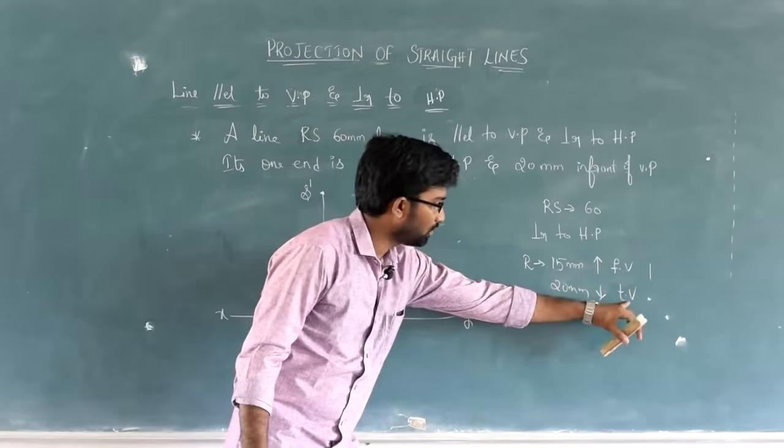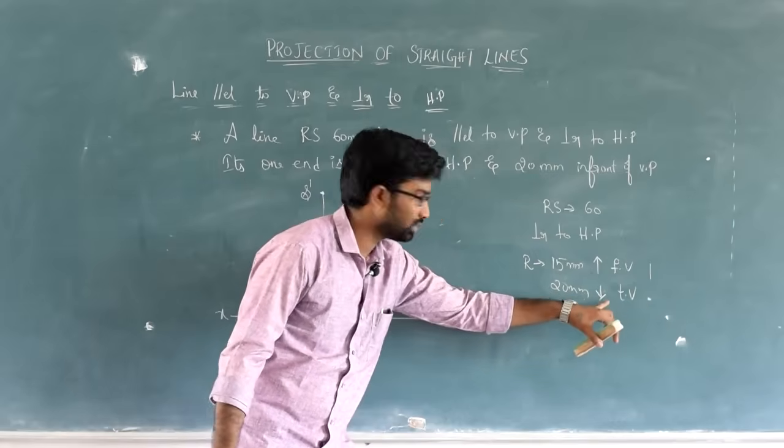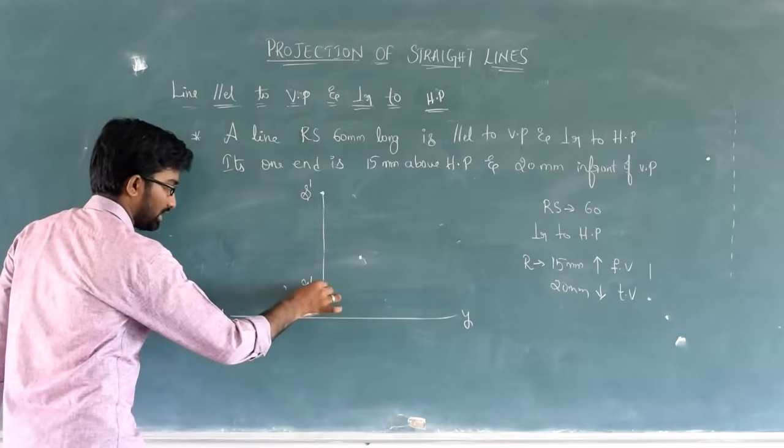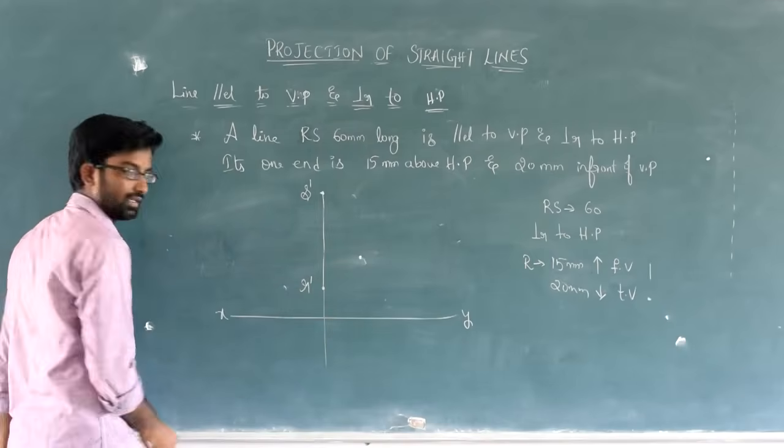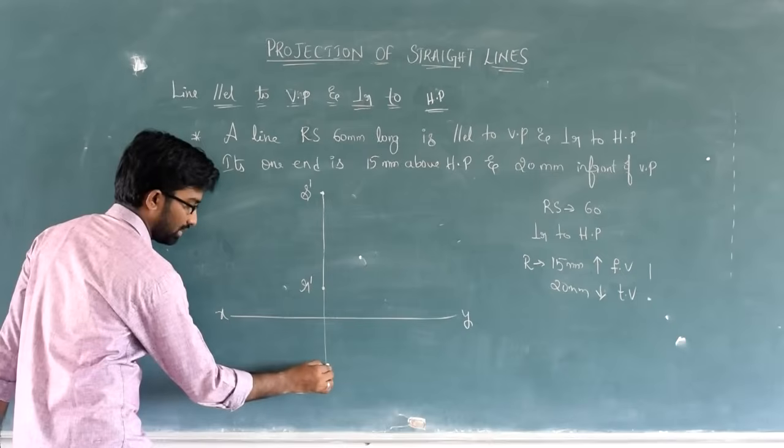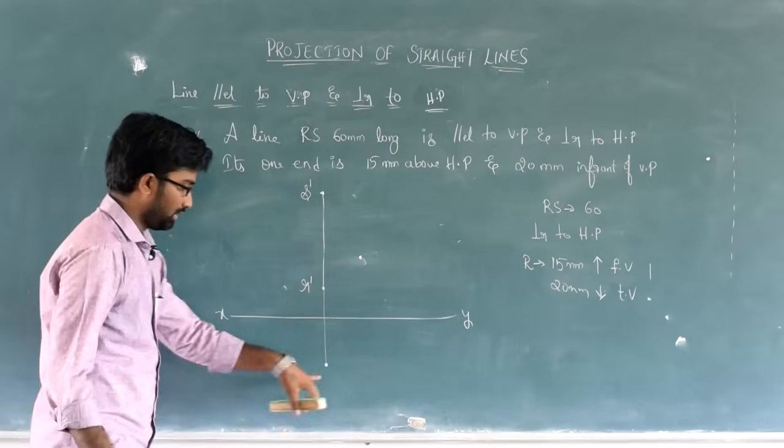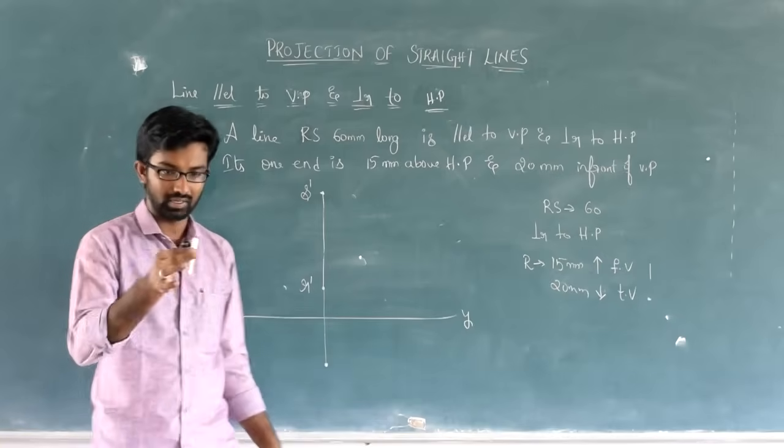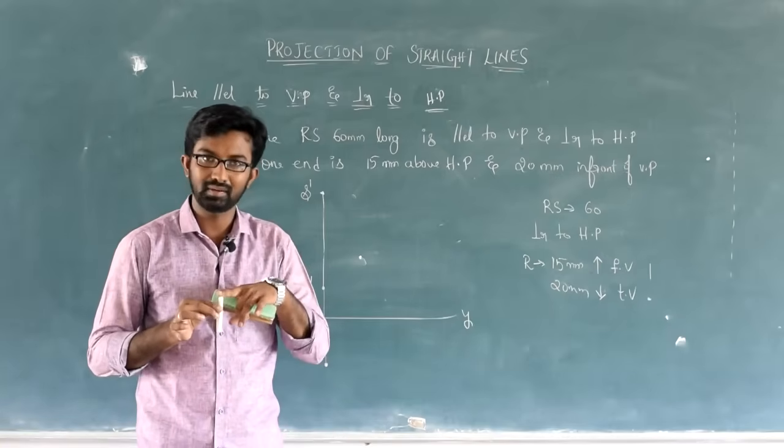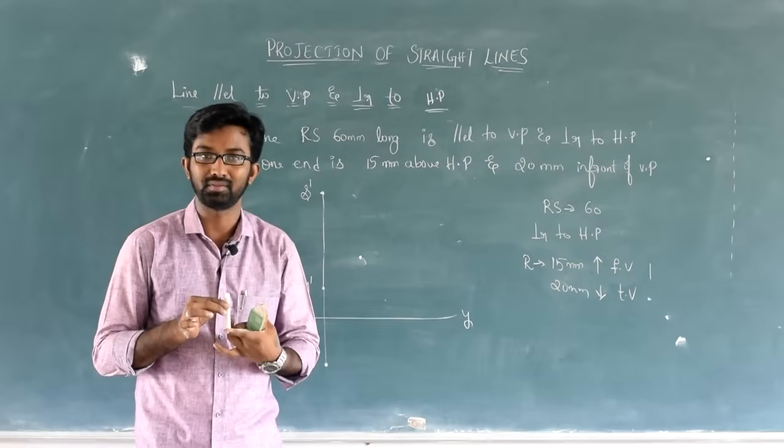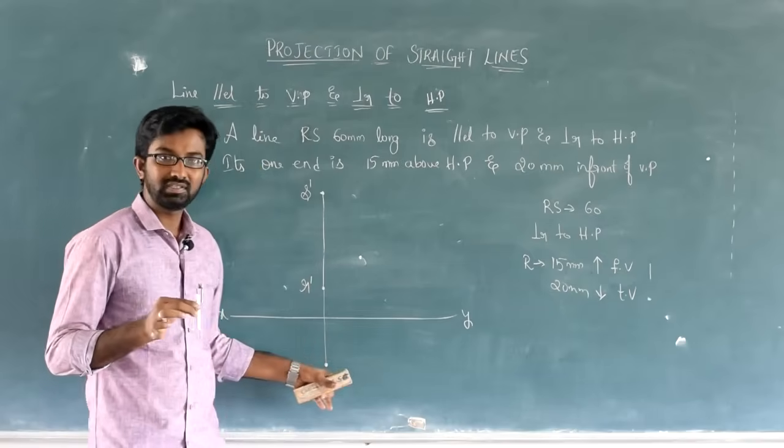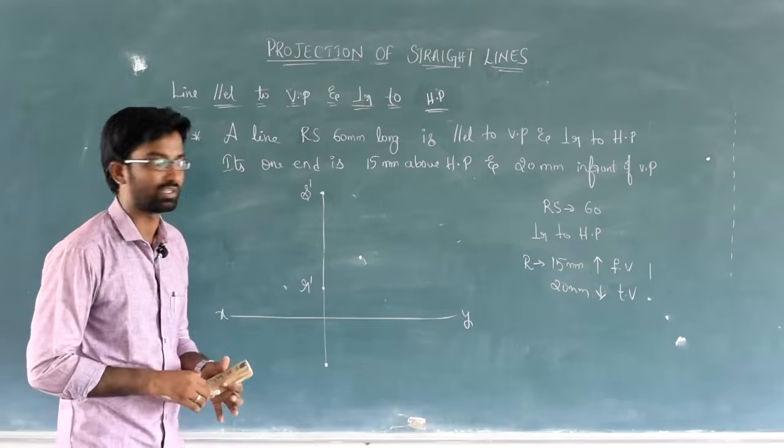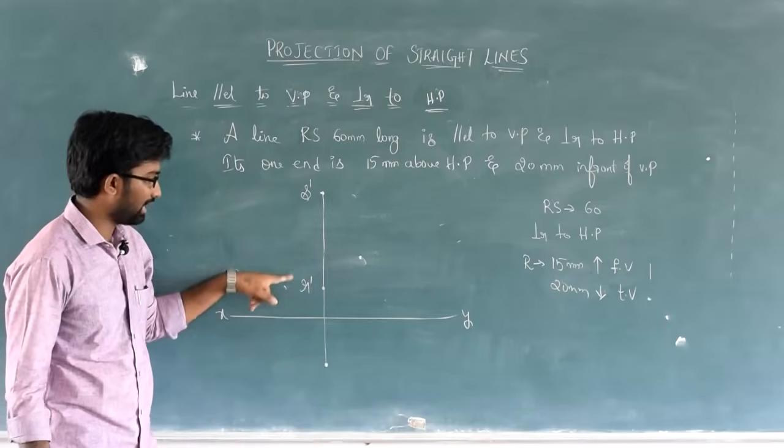Now, from here, the line should be vertical not horizontal. So, from here draw line vertically. Length is 60 mm. So, from here, 60 mm distance, put other end S dash. Now, top view. Top view shows point. Where? Below. How many mm below? 20 mm below.